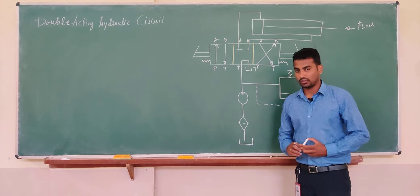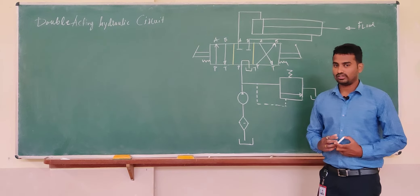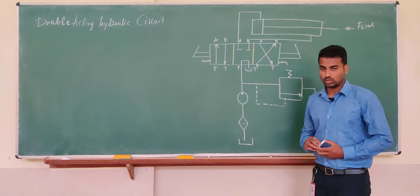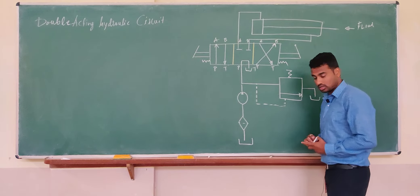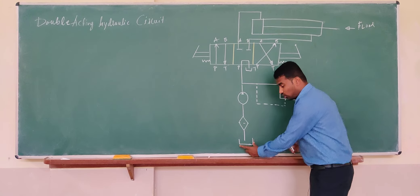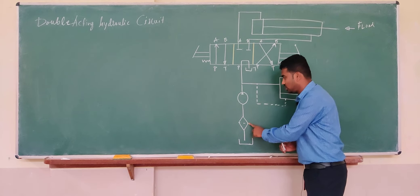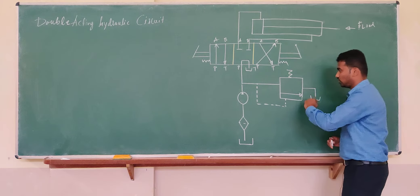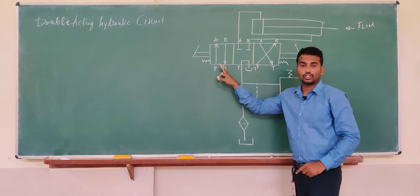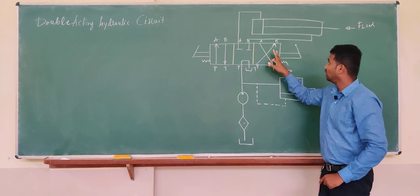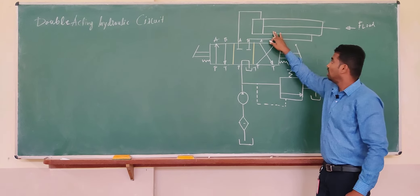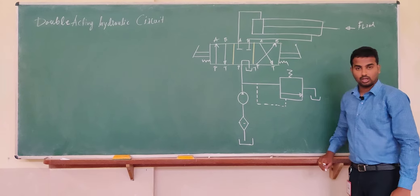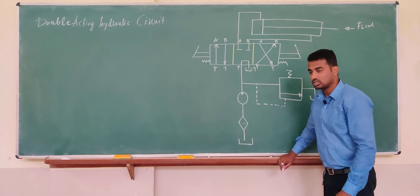We will be discussing the double acting hydraulic circuit. First I will discuss the parts or components of this hydraulic circuit, then their functions, and then how this hydraulic circuit works. The components are: at the bottom we have the reservoir, then a filter, then a pump, then the pressure relief valve, then the directional control valve, and finally the actuator fitted with a piston and rod.